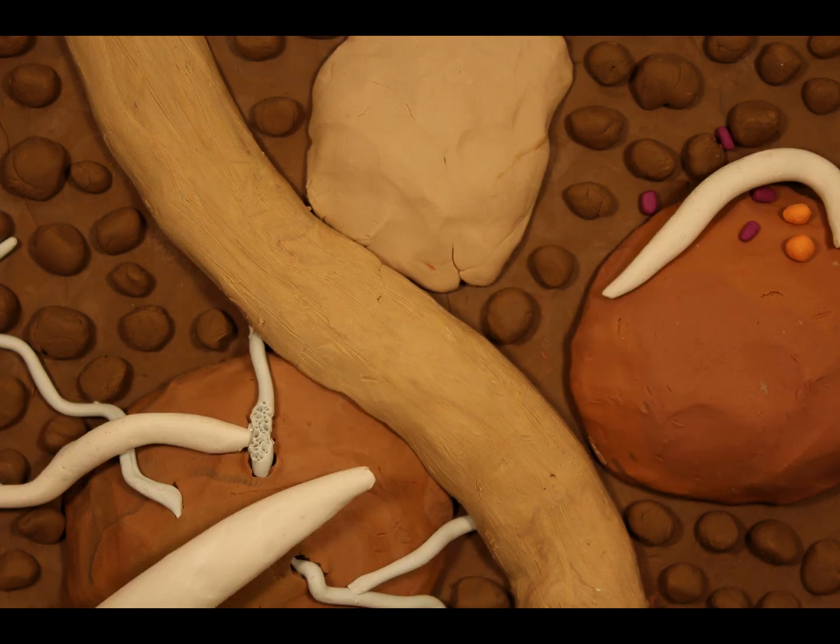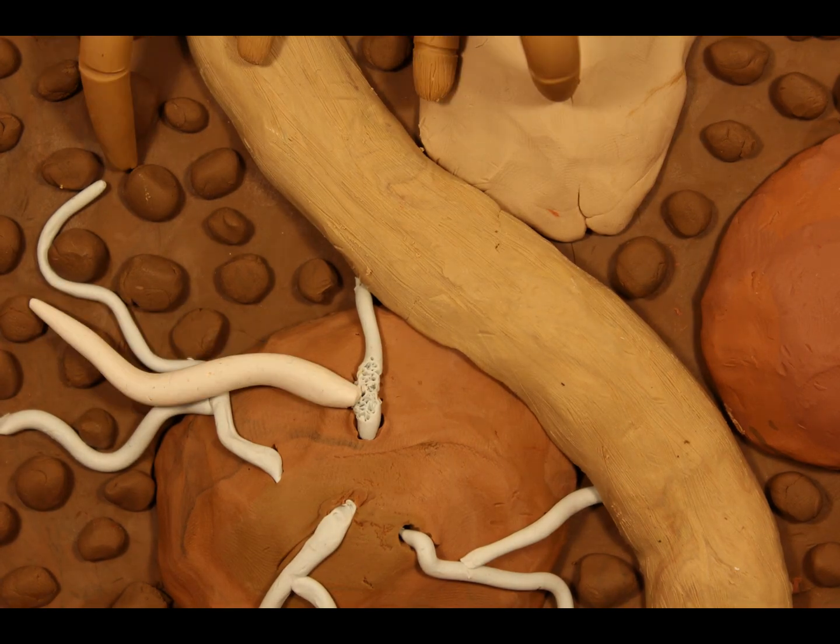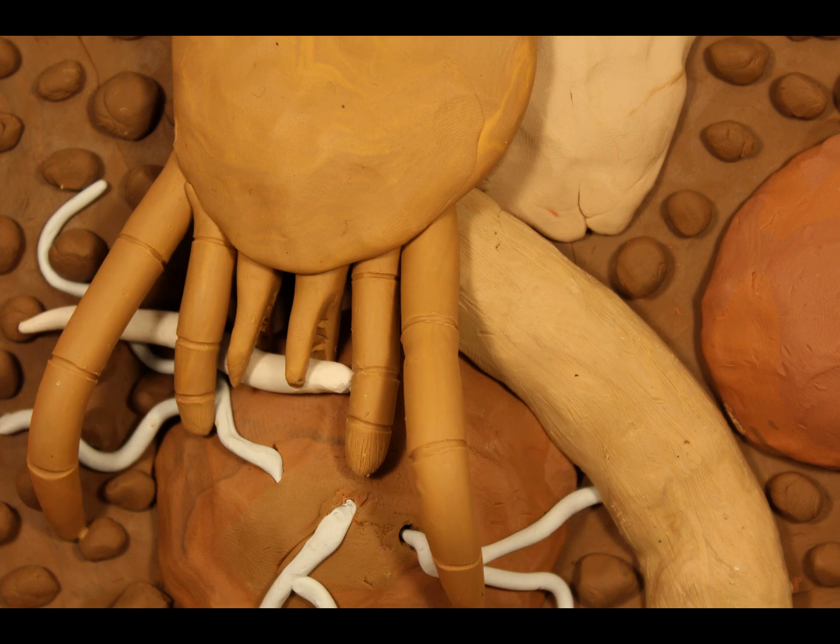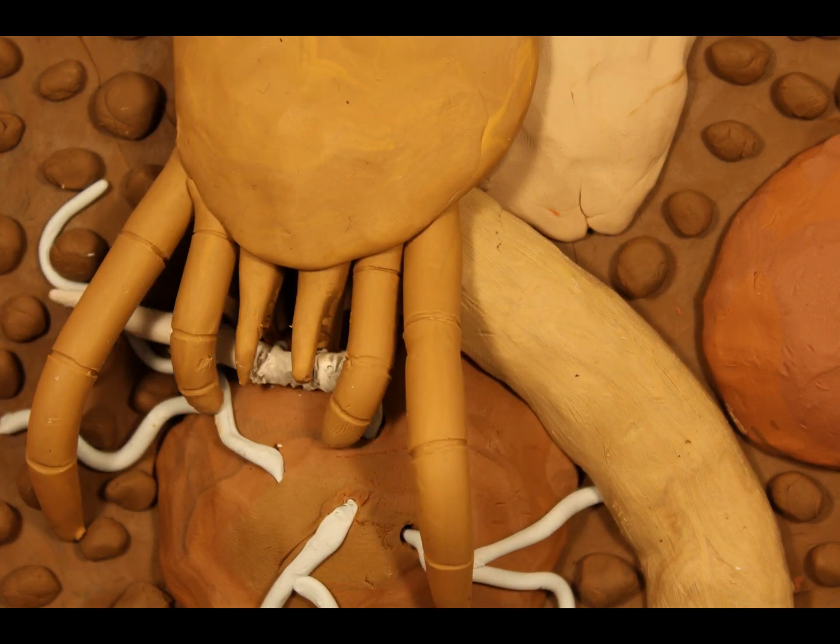yet many other organisms eagerly seek the protein the wiggling worms provide, such as this predatory mite dissolving nematodes into drinkable soup.